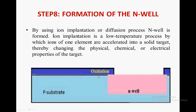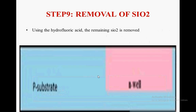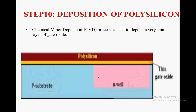We can utilize arsenic gas here to create the N-well. The remaining silicon oxide is then removed using hydrochloric acid. Next, a chemical vapor deposition (CVD) process is used to deposit a very thin layer of gate oxide, as you can see — this is the thin gate oxide layer.